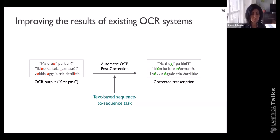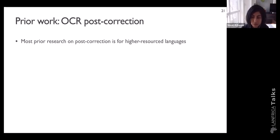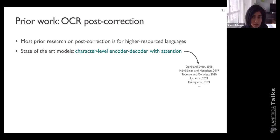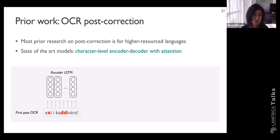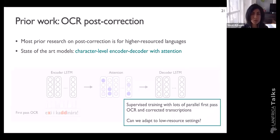The standard setup of post-correction is a text-based sequence-to-sequence task and it doesn't use visual information — the first-pass OCR is the input text and the corrected transcription is the output. Post-correction is well-studied in the high-resource setting, particularly for English. Many recent state-of-the-art methods use a character-level encoder-decoder model where characters in the first-pass OCR are converted to embeddings and passed to an LSTM encoder. An attention mechanism with a decoder LSTM generates the corrected transcription at the character level. Existing work has typically relied on supervised training with lots of parallel first-pass OCR transcriptions and corresponding corrected text.